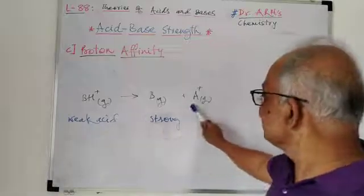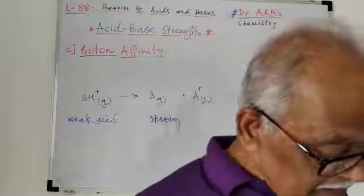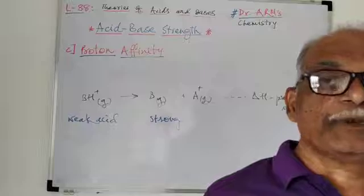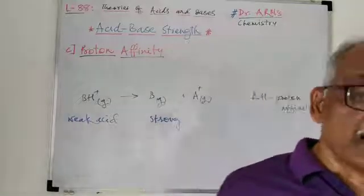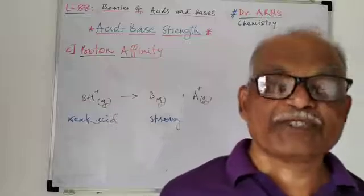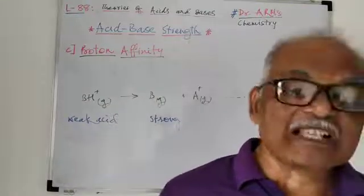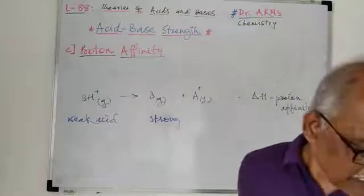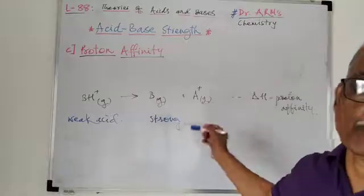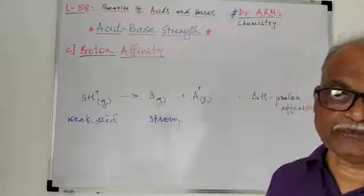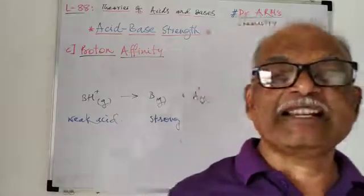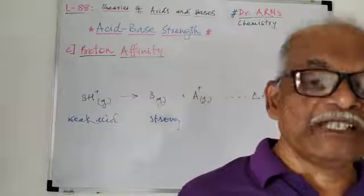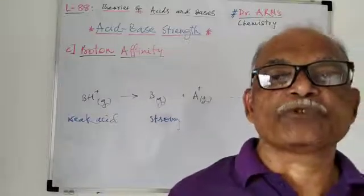In such reactions, if the reactions are favorable, then measurements using mass spectrometry and ion cyclotron resonance spectroscopy can be used to measure the proton affinity indirectly. So the measurement of proton affinity is based on mass spectrometry or ion cyclotron resonance spectroscopy.